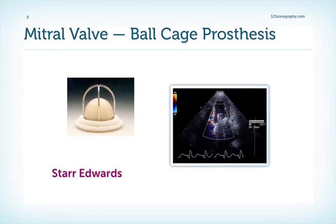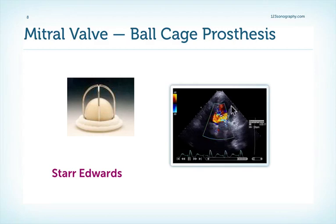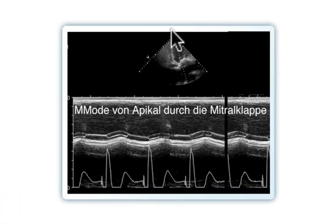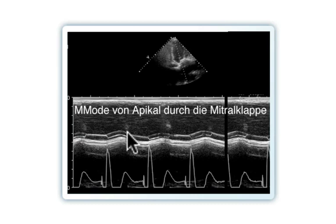Here is the same valve now with color Doppler. The typical finding is that we have flow around the ball, which is usually of fairly high velocity, so we have aliasing. Probably the best way of assessing the opening and closing motion of cage ball valves is with M-mode. You put the M-mode ray from the apical position right through the valve, and then with the help of the ECG you can delineate systole and diastole. This is systole, and here the opening position of the ball is nicely visible, while this is the closed position. You can see it move back and forth very nicely throughout the cardiac cycle.